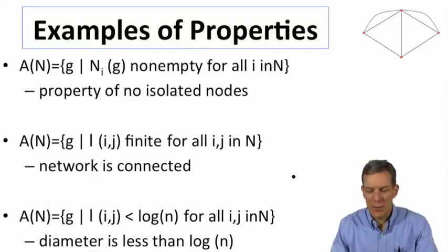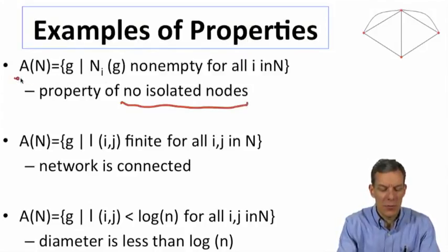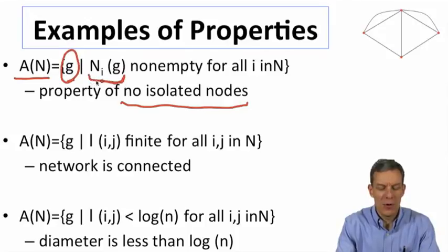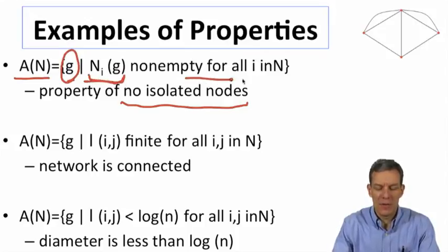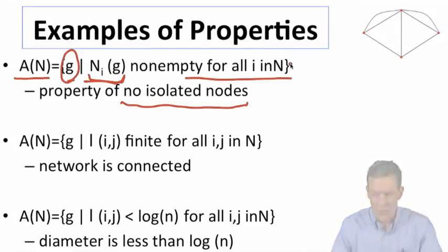So it's just a list, here are the networks that have a particular feature that we might be interested in. So just in terms of examples, if you want to have the property that a network has no isolated nodes, then the property is just represented by saying it's all the networks such that the neighborhood of every node is non-empty. So every node has a non-empty neighborhood. That's a property.